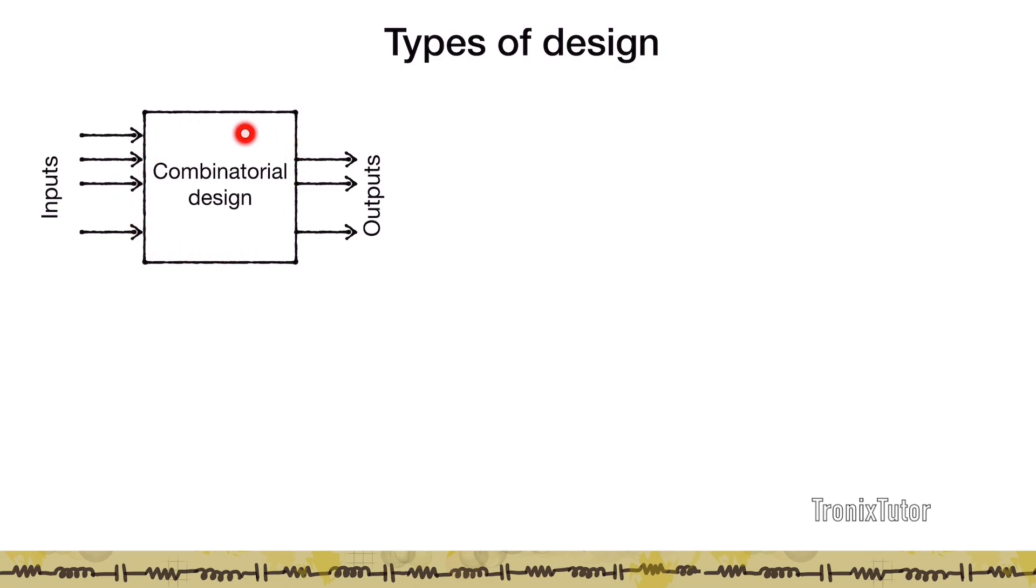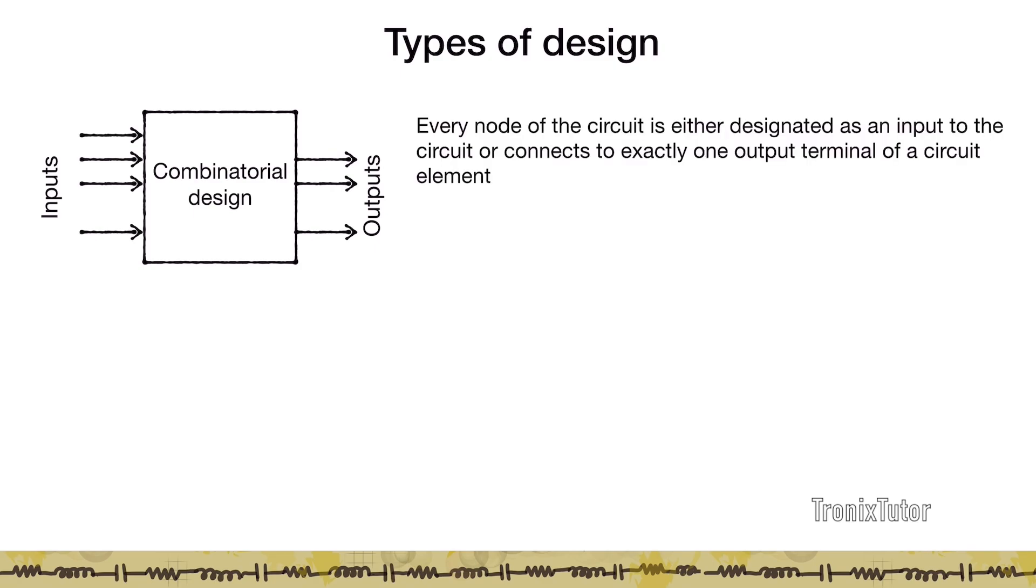The first one is known as combinatorial design. In this kind of design, every node in the circuit is either designated as an input or connects to other nodes in the circuit. The circuit contains no cyclic paths, which means that every path visits each circuit node only once. There is only a single direction of the flow of information. Once you give certain inputs, certain outputs will appear based on these inputs after some time. Information flow is unidirectional in a combinatorial circuit.